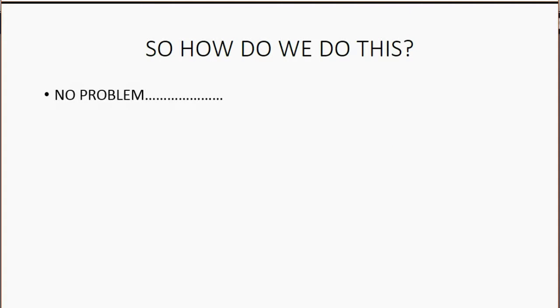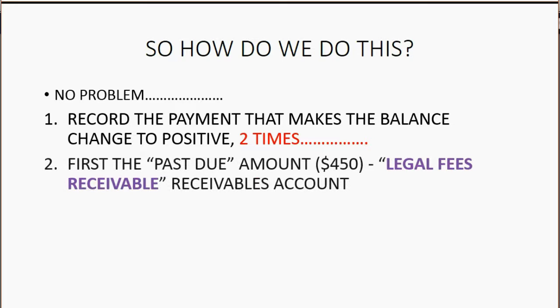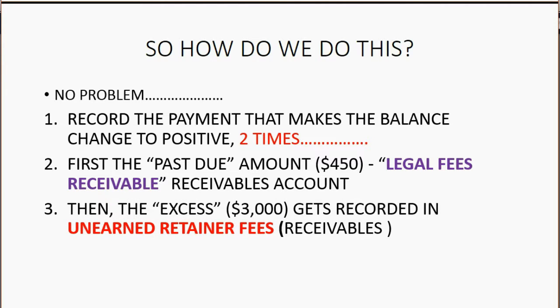So how do we do this? We're going to record this payment from Candy two times. The first time we record it, we will put the money amount as $450, and the accounts receivable account that we choose will be legal fees receivable. That's because that $450 is on an invoice that went into the legal fees receivable account. Then we're going to record that exact same payment again, except the money amount will be the excess, $3,000, and the accounts receivable account will be the unearned retainer fees receivable.